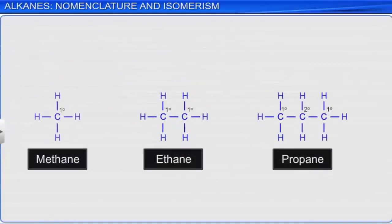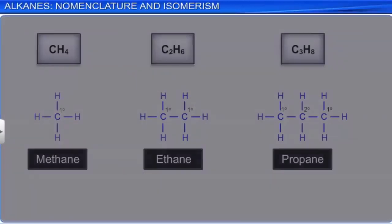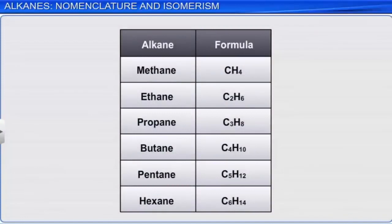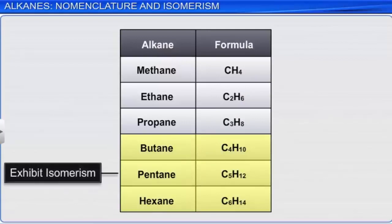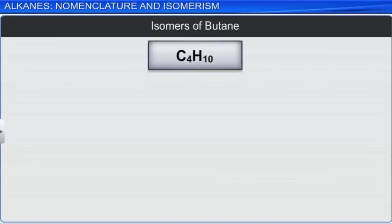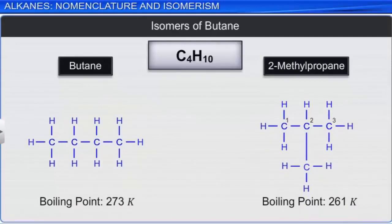The first three alkanes in the series — methane, ethane, and propane — only have one molecular structure. However, as the number of carbon atoms in an alkane goes on increasing, we get more than one structural arrangement for a particular molecular formula. Such compounds are called isomers. The phenomenon of exhibiting isomers is called isomerism. For example, in butane, we get two possible structures — one as a continuous chain and the other branched. Although the chemical formula for all these structures is the same, their properties differ due to the differences in their carbon chain structure. Such compounds are called chain isomers.